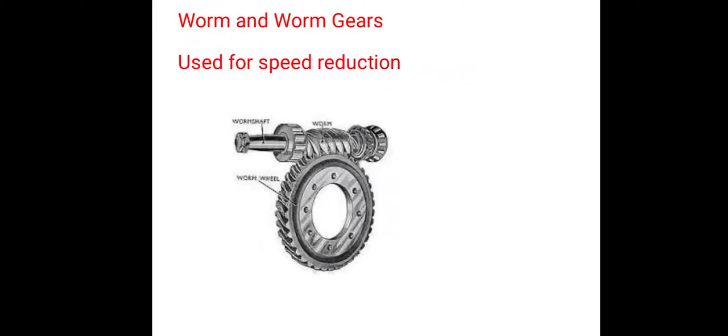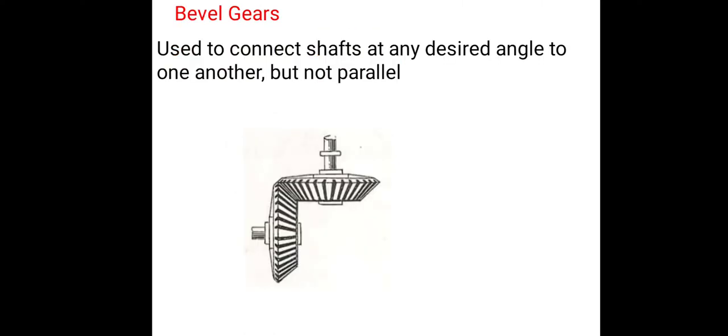Worm and worm gears are used for speed reduction. Bevel gears are used to connect shafts at any desired angle for power transmission, but are not used for parallel shafts.